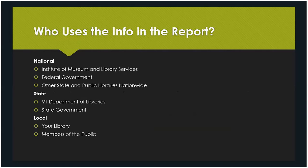Who uses the info in the annual report? The primary user is IMLS — we're basically required to submit the report to them. They use it to show how libraries are doing throughout the country, things that are growing or shrinking, and to make a case for the significance of libraries, but also to adjust funding. They're a significant funding source for all the state library agencies. The federal government uses it in the same way. Additionally, other state and public libraries throughout the country use it to compare themselves to libraries of the same size. We're pretty helpful in that respect because we have a lot of small, rural libraries.